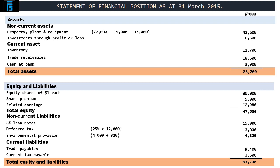Crossing over to equity and liabilities, we start with equity and repeat the balances already derived in the statement of changes in equity. That's share capital of $30,000, share premium of $5,000, and retained earnings equal to $12,980, which provide a total of $47,980.